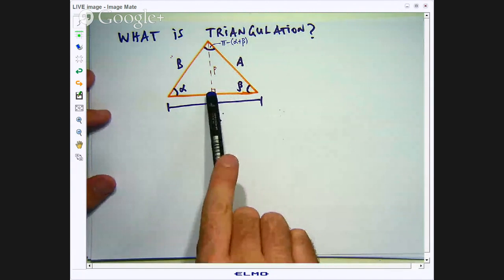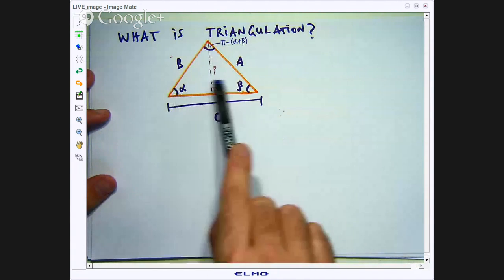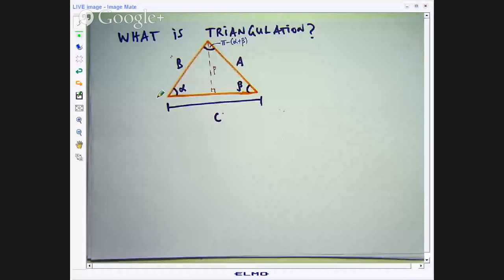So how can I get this length P? Only by knowing this length, this angle and this angle. Well there are two ideas going on here. First of all some basic trigonometry involving a right angle triangle and also the law of sines. Now both of these are learnt at high school. So let us show how we can bring these ideas together.